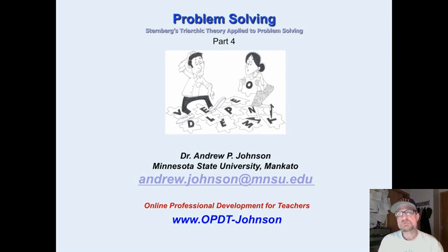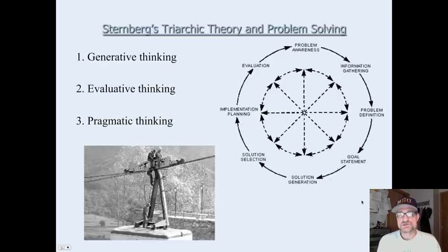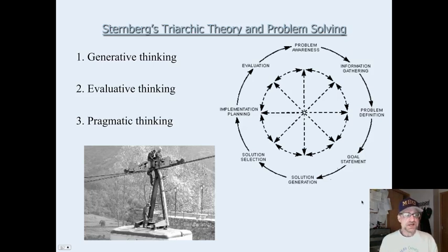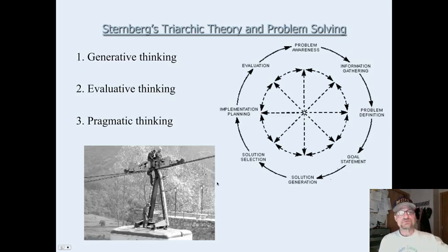Understanding this process will enable you and all human beings to be better problem-solvers and to come up with fewer poor ideas. Robert Sternberg's Triarchic Theory of Intelligence says that intelligence occurs in any area or field when there is a combination of three types of thinking.